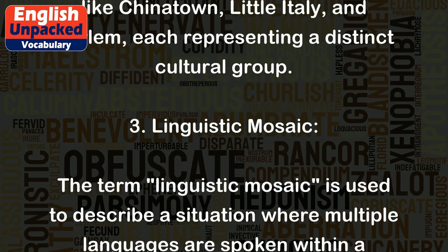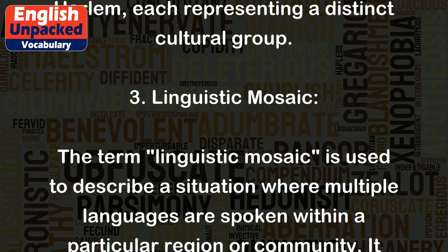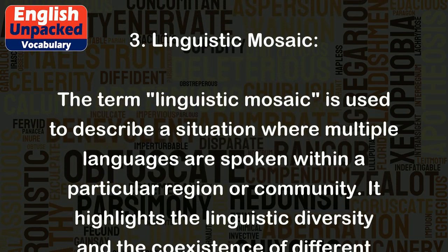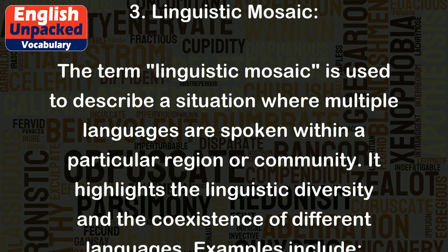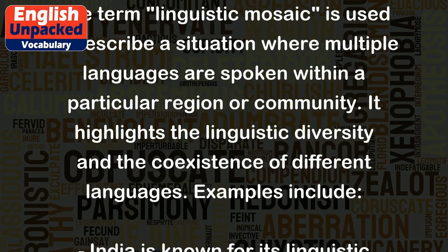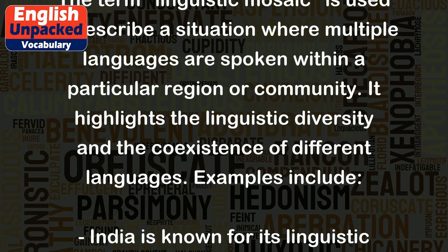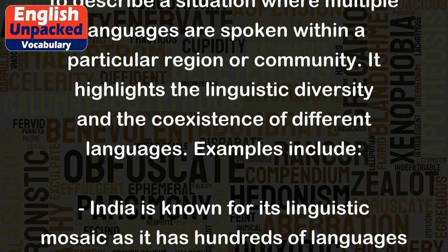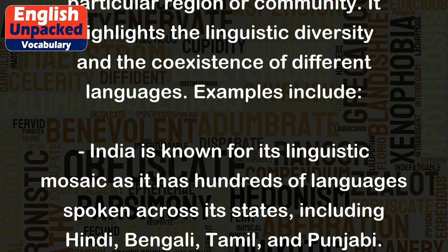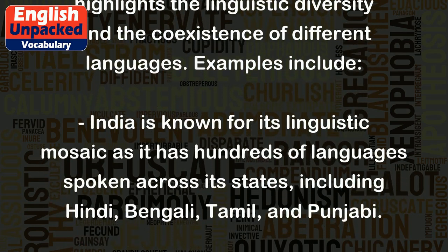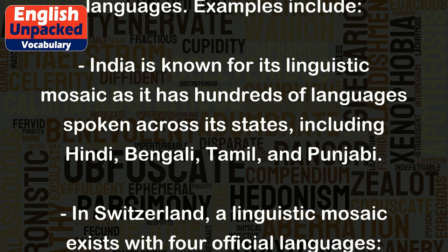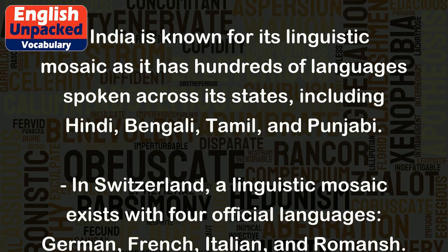3. Linguistic Mosaic. The term 'linguistic mosaic' is used to describe a situation where multiple languages are spoken within a particular region or community. It highlights the linguistic diversity and the coexistence of different languages. For example, India is known for its linguistic mosaic as it has hundreds of languages spoken across its states, including Hindi, Bengali, Tamil, and Punjabi.